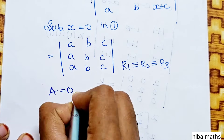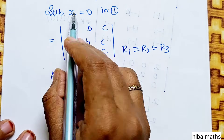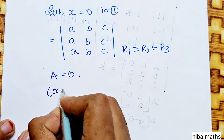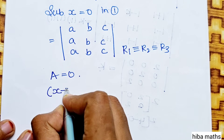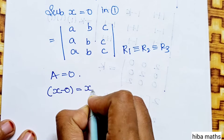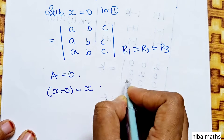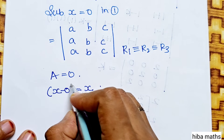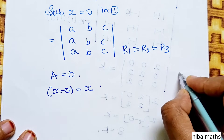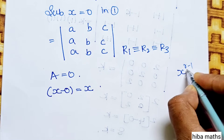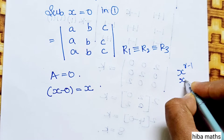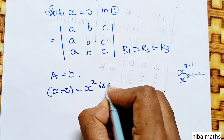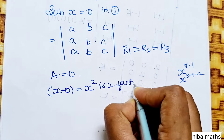Since the determinant equals 0 when x equals 0, x minus 0, which is x, is a factor. Furthermore, since R3 equals 2, the power r minus 1 means x squared is also a factor.